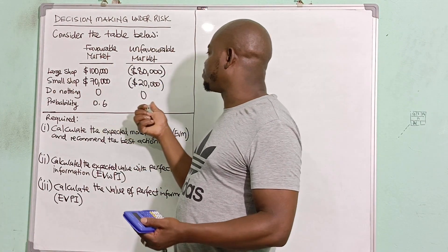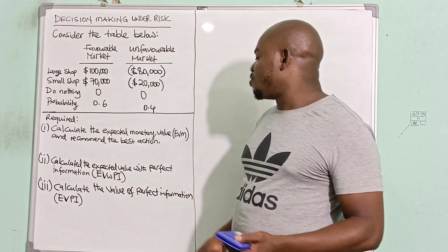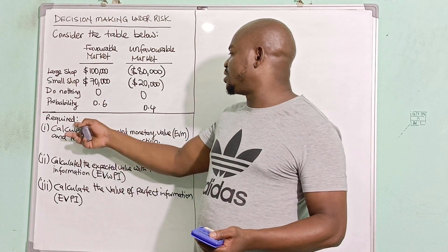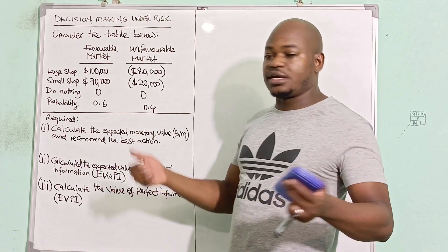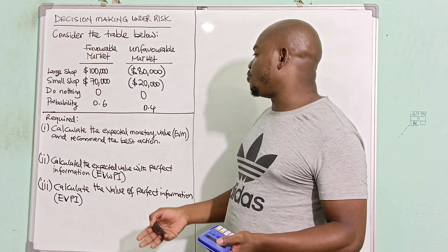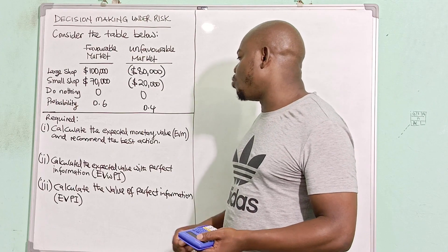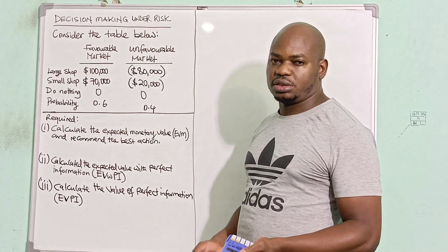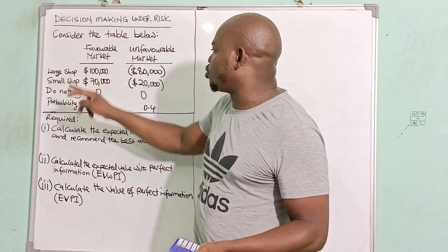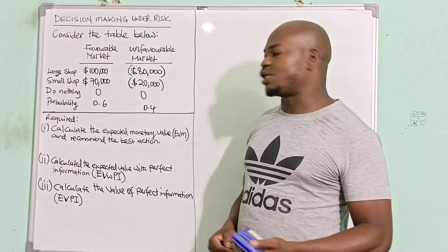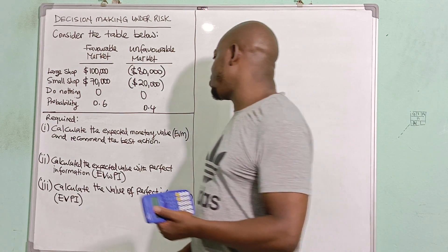From the table we've been given with states of nature and different alternatives, we are required — as an examiner might ask — to calculate the expected monetary value and recommend the best action. So we'll calculate the expected monetary value for each of the three alternatives.